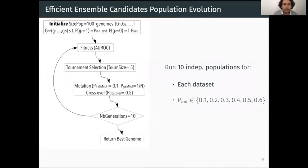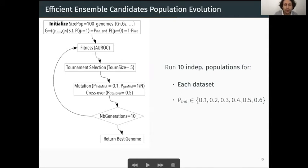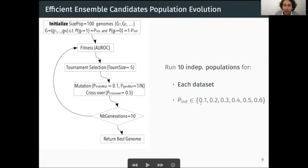We use a classical genetic algorithm scheme: we initialize a population of 100 genomes with probability p_init for each gene to be active. We compute the fitness of each genome, apply tournament selection to select the best individuals for the next generation, then apply mutation and crossover for variation. We repeat these steps for 10 generations. We run 10 independent populations for each dataset and each value of p_init, ranging from 0.1 to 0.6.